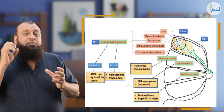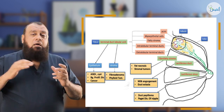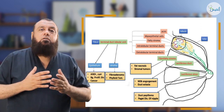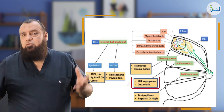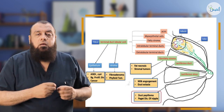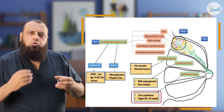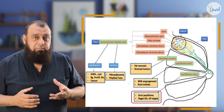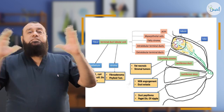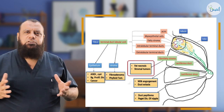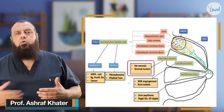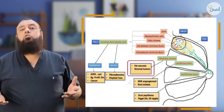Don't forget the terminal duct lobular unit. Other diseases of the breast can occur from the ducts — for example, duct ectasia. Or from the lactiferous duct, duct papilloma. Or what we call Paget's disease of the nipple, which occurs from the large lactiferous duct surrounding the nipple. So: duct ectasia, duct papilloma, Paget's disease. And from the surrounding stroma of the breast, which is connective tissue and fat, stromal tumors can occur — for example, lipoma, fibroma, sarcoma.